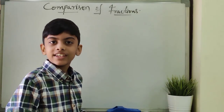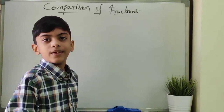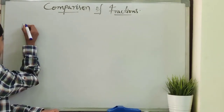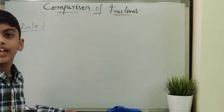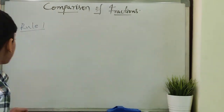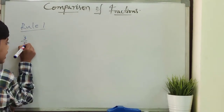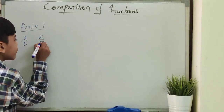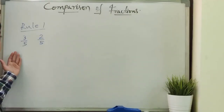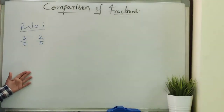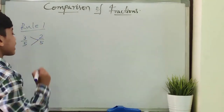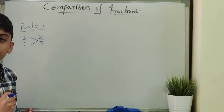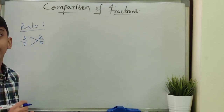So to compare fractions easily, we have 3 rules. Rule 1: if we have fractions with same denominators, for example 3 by 5 and 2 by 5, here denominators are equal, so compare numerators. In numerators, 3 is greater than 2, so 3 by 5 is greater than 2 by 5. The fraction with the greater numerator is greater.